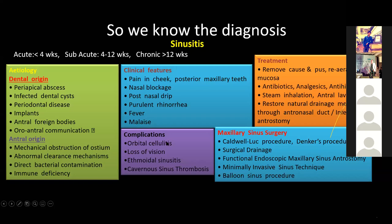If we do not treat acute sinusitis, it can lead to orbital cellulitis through venous drainage — veins that pass to the brain and to the orbit through venous channels, causing thrombophlebitis. It can give orbital and cranial complications, leading to loss of vision, and can give you cavernous sinus thrombosis. So it is very important to treat sinusitis in the acute phase with medication.